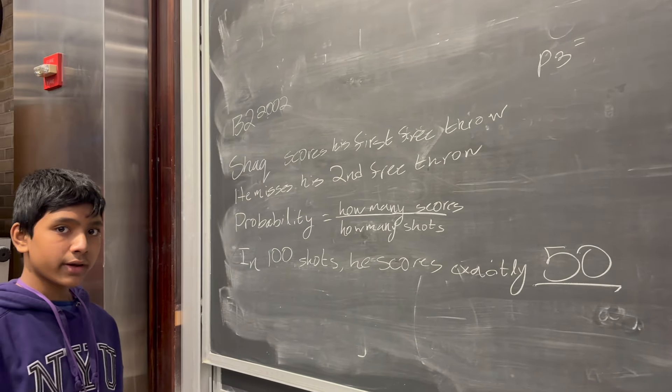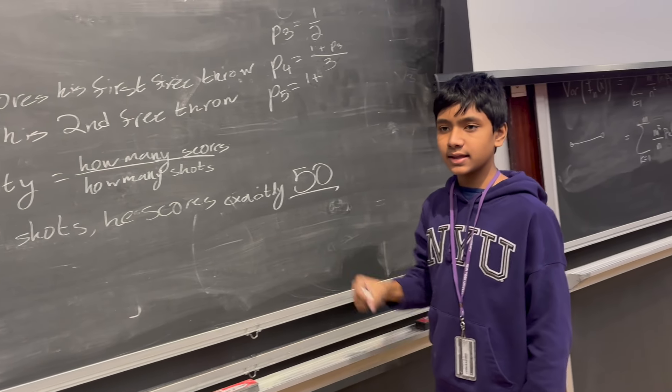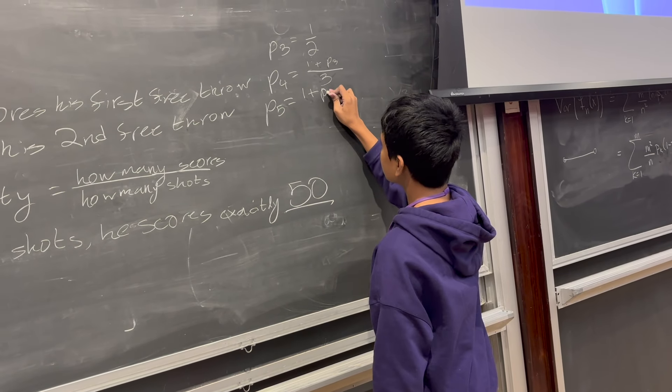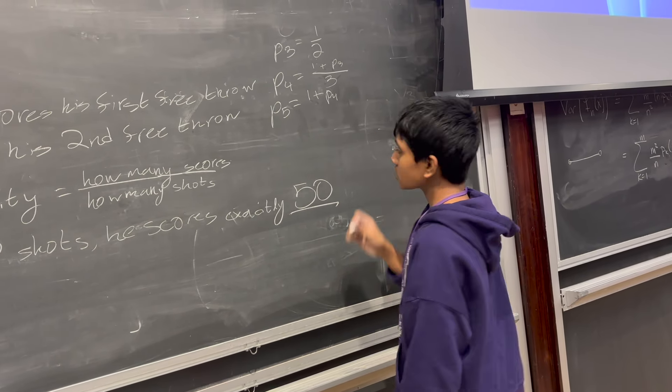Now, let's think about probability 4. Probability 4 is, well, we already know he'll have made at least one shot, that shot that he scored the first time. But then, there's a probability 3 chance that he makes another shot, that he makes the third shot, divided by the three shots that he'll have taken in total.